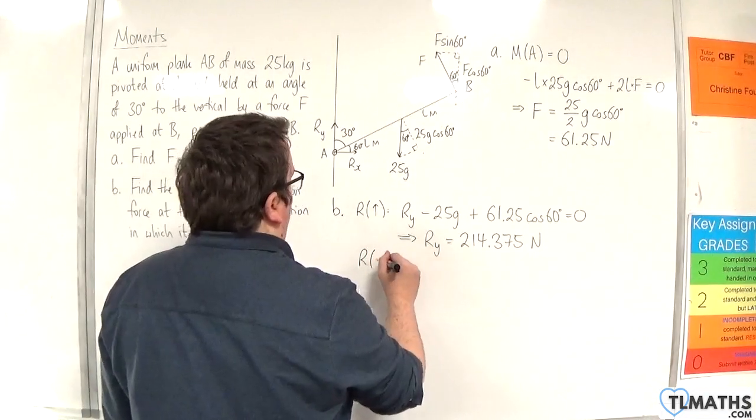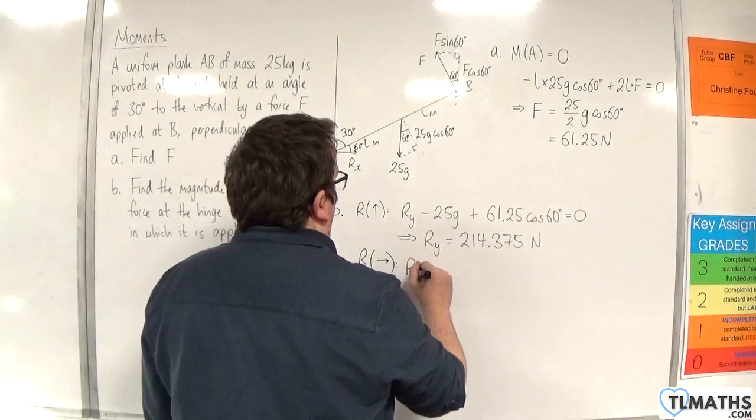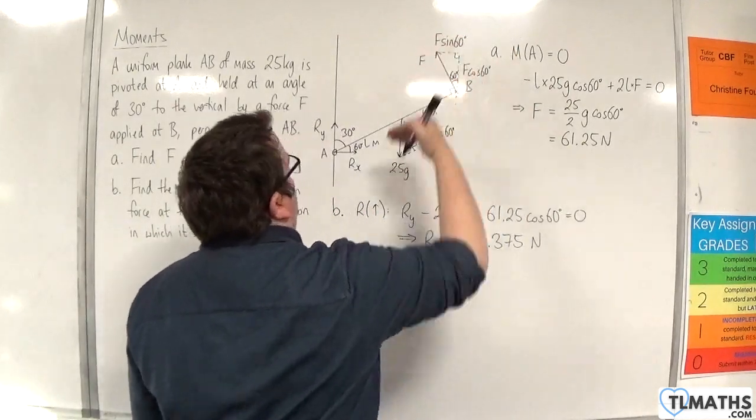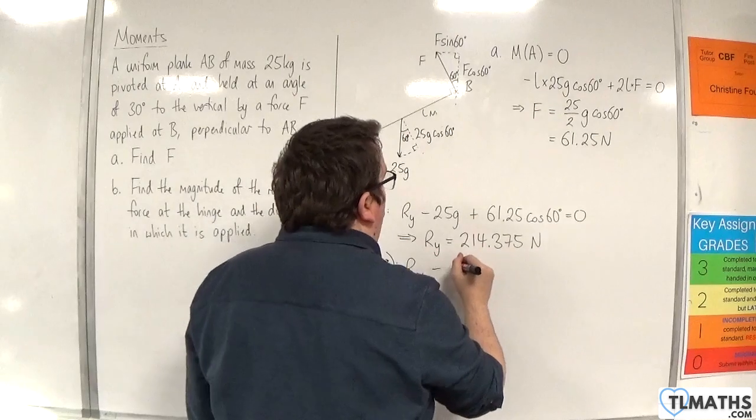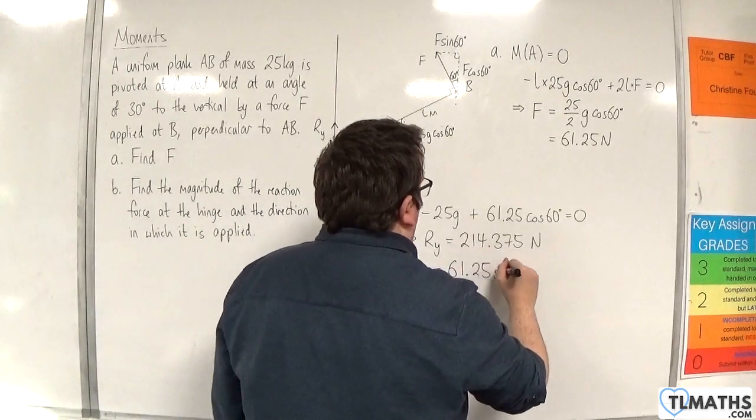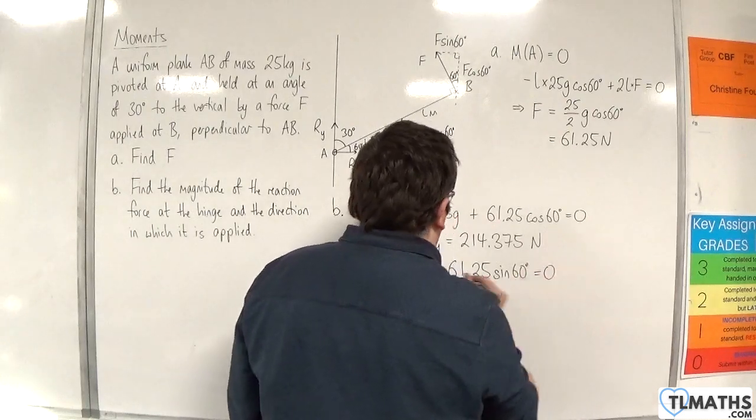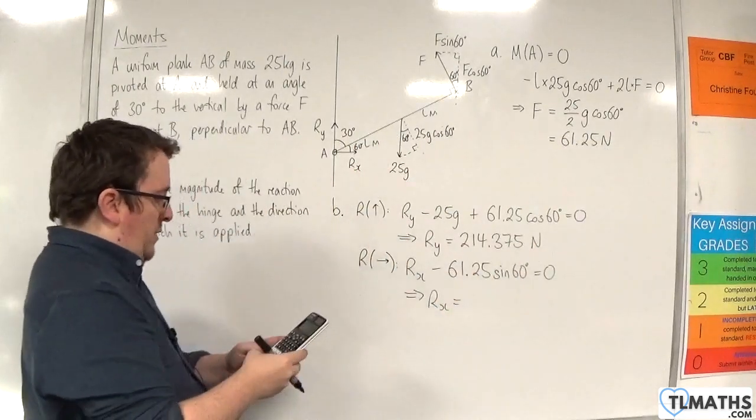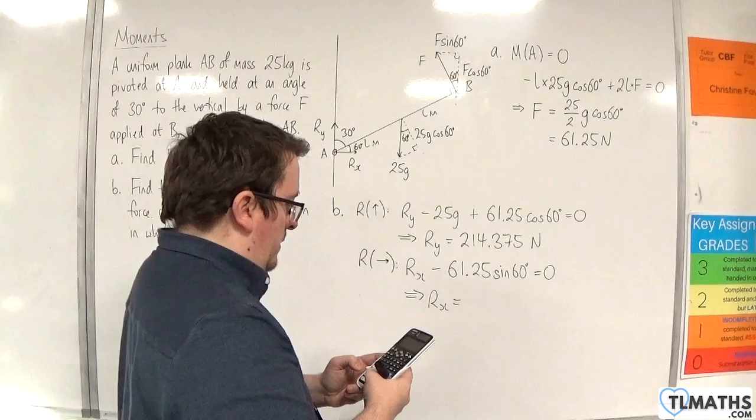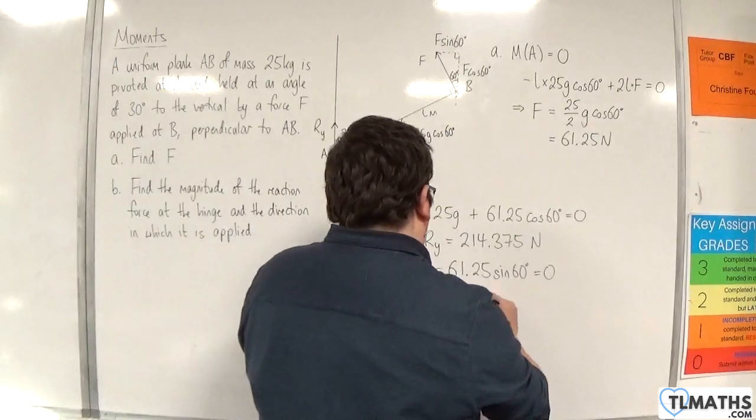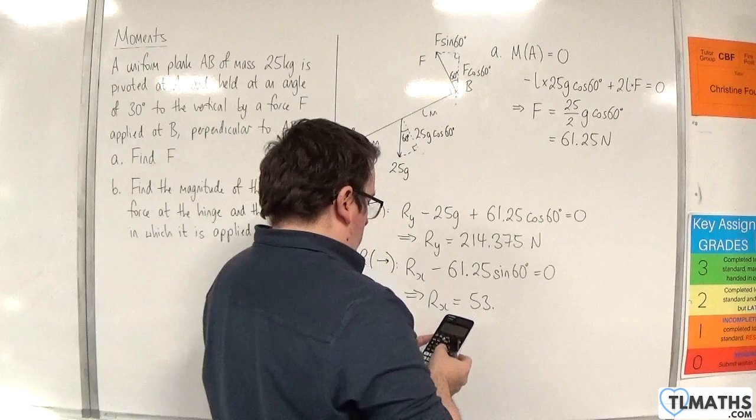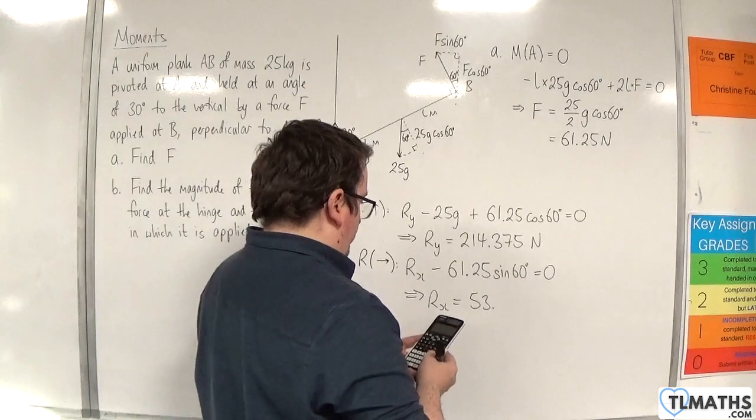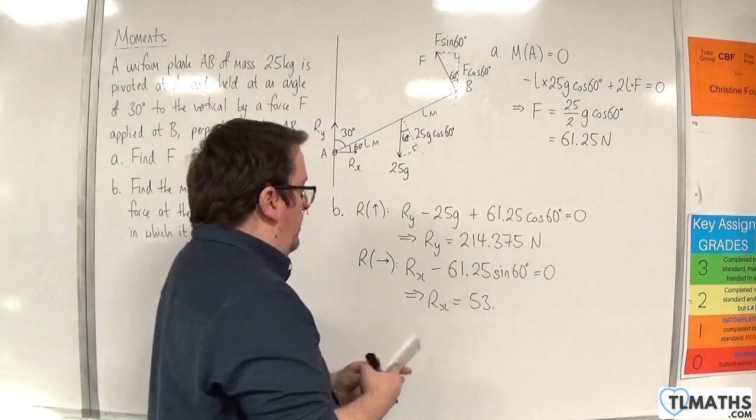If I resolve horizontally, I'm going to take to the right as positive. We have R_X, and we've got the horizontal component of F which is F sine 60, so take away 61.25 sine of 60 equals 0. So 61.25 times sine of 60 is... Let's do it that way.